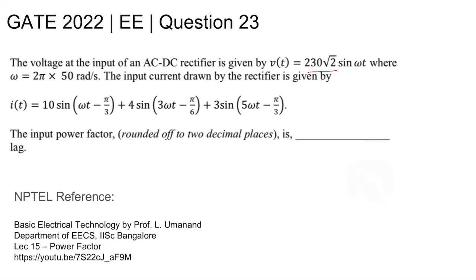plus 4 sin(3ωt - π/6) plus 3 sin(5ωt - π/3). The input power factor rounded up to two decimal places is being asked for. NPTEL reference: you can refer to